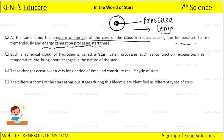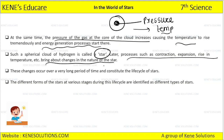When the energy generation starts, the spherical clouds are made up of hydrogen. And later, processes such as contraction, expansion, and rise in temperature bring about changes in the nature of the star. These changes occur over a very long period of time and constitute the life cycle of a star.